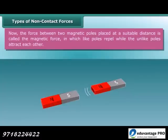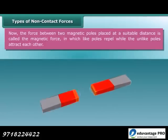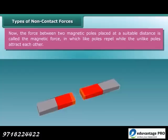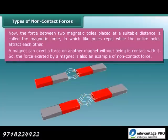The force between two magnetic poles placed at a suitable distance is called the magnetic force, in which like poles repel while unlike poles attract each other. A magnet can exert a force on another magnet without being in contact with it, so the force exerted by a magnet is also an example of a non-contact force.